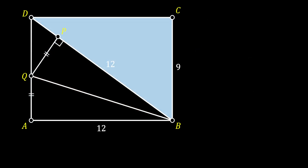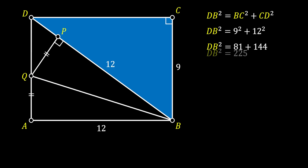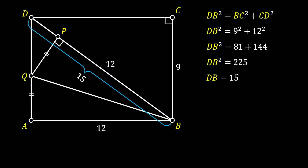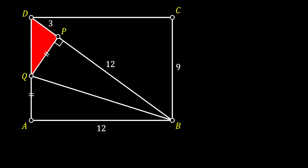Next, let's look at the right triangle DCB. We can use the Pythagorean theorem to find the diagonal DB, since DB squared equals the sum of BC squared and CD squared. Substituting our values, we get that DB equals 15. Now, the line segment DP can be calculated as the difference between DB and PB. Substituting our values, DP equals 3. This line represents one of the legs of our red triangle. This is the common part for all three methods.